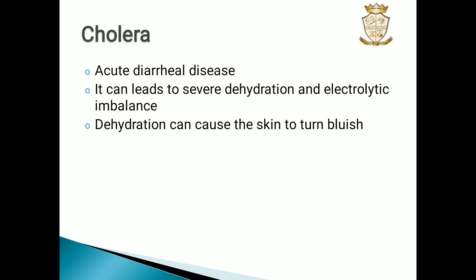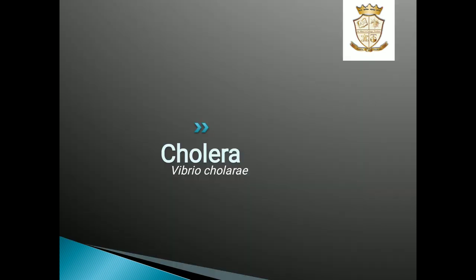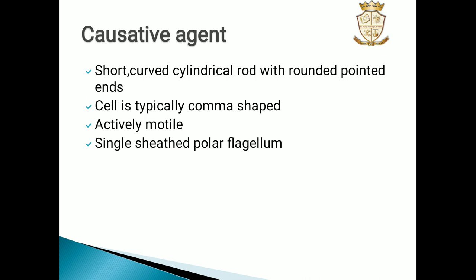The next disease is cholera. Cholera is an acute diarrheal disease that can lead to severe dehydration and electrolyte imbalance. The dehydration from this condition can cause the skin to turn bluish in color. The causative agent of cholera is Vibrio cholerae — a short, curved, cylindrical rod with rounded pointed ends.